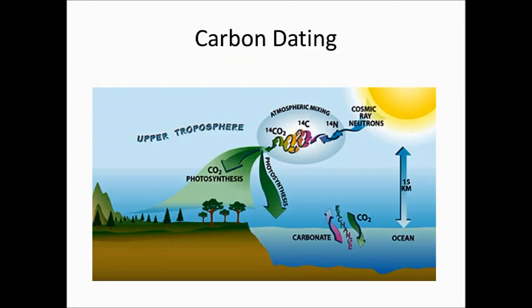So how does carbon dating work? The sun's cosmic rays bombard the atmosphere, and you get an atmospheric mixing of carbon dioxide, carbon, and nitrogen, and then CO2 photosynthesis with a carbonate exchange between the ocean and the upper troposphere. Okay, I'm just making all this up — but it sounded really cool. There is some legitimacy to how all this happens with carbon entering living things.